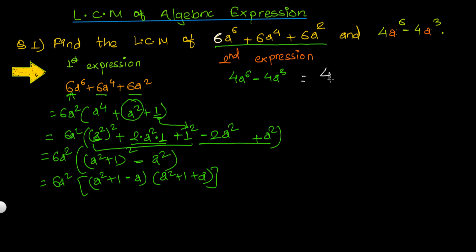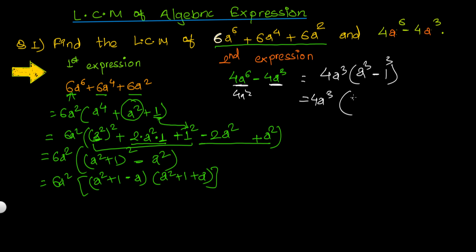Now the second expression 4a⁶ − 4a³ is relatively easier. Factoring out 4a³ gives 4a³(a³ − 1). This is in the form a³ − b³, whose formula is (a − b)(a² + ab + b²). With b = 1, this becomes 4a³(a − 1)(a² + a + 1).